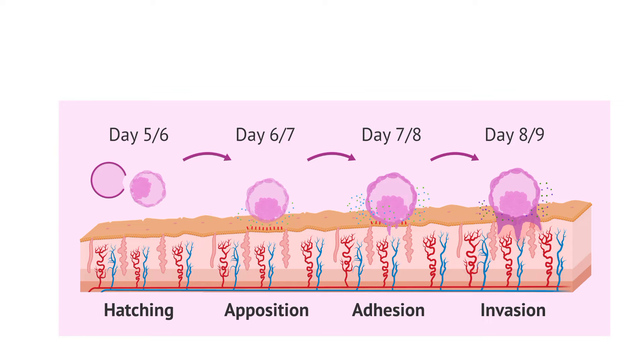On day 7, the blastocyst gets implanted in the superficial compact layer of the endometrium and derives nourishment from it.